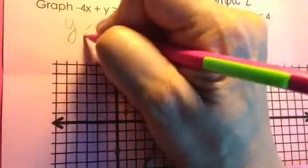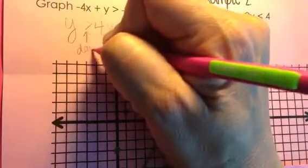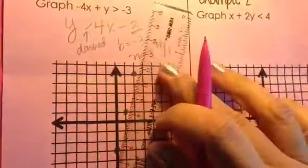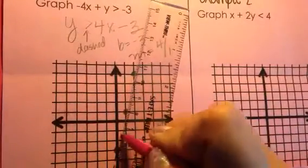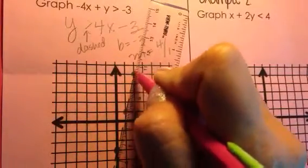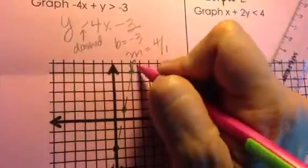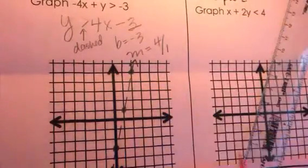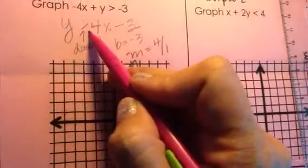Now, because this was a straight-up greater than, we need a dashed boundary line. So, we'll take our ruler and create that boundary line around our dots to have a dashed line.